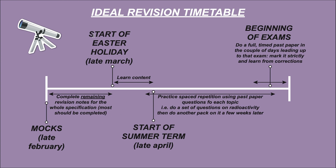From the start of the Easter holiday, you want to be learning the content — going through your flashcards, talking through information out loud, and writing on a whiteboard from memory. Then from the start of the summer term in late April through to the beginning of exams, you want to be regularly doing spaced repetition using past paper questions for each topic. Do a set of questions on radioactivity, then come back to another question pack a few weeks later — that way you're continually revisiting topics and applying corrections each time.